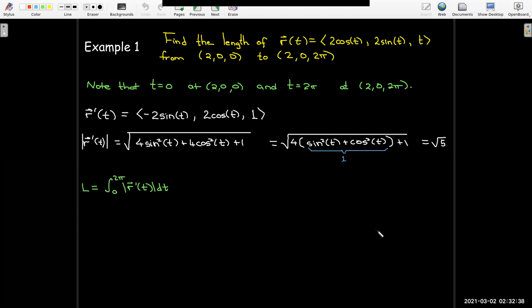So using our formula for the arc length, I would take the integral from 0 to 2π of the length of r prime of t, which would just be the integral from 0 to 2π of radical 5 dt, which is just 2π radical 5.